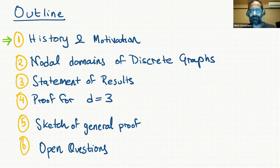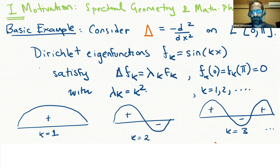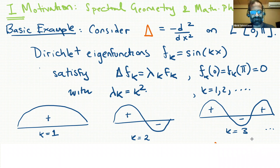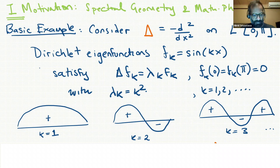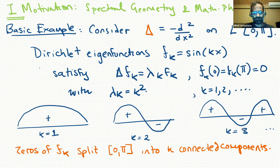The basic example in this subject is a very simple ODE. Consider the Laplacian on a one-dimensional interval from zero to pi and look at its Dirichlet eigenfunctions — L2 functions satisfying the eigenvalue equation and equal to zero at the endpoints. These can be explicitly computed: they're sine of kx, where k is an integer, and the corresponding eigenvalue is k squared. The kth eigenfunction has k minus one zeros, and they split the interval into k connected components.